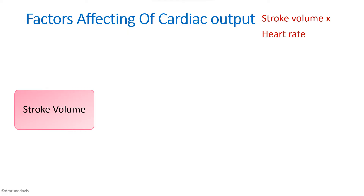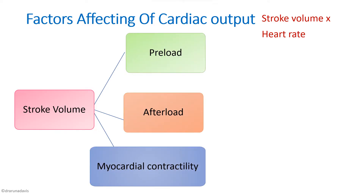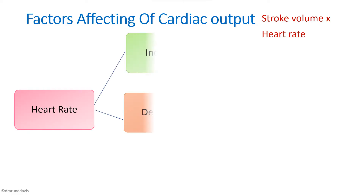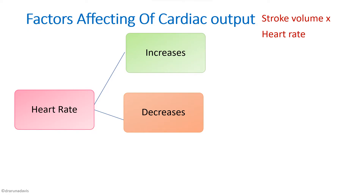Stroke volume depends mainly on three factors: preload, afterload, and myocardial contractility. There are also factors which increase as well as decrease the heart rate. In general, these are the factors that affect cardiac output, and we will see each one by one.